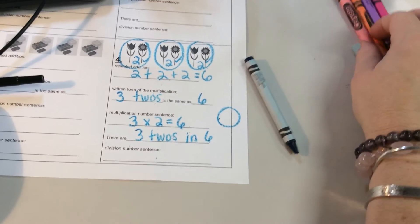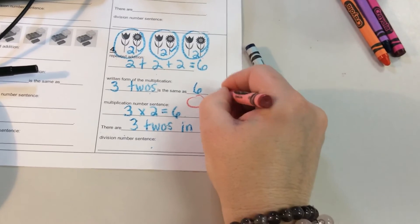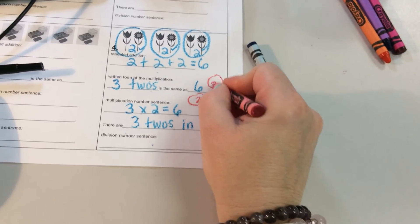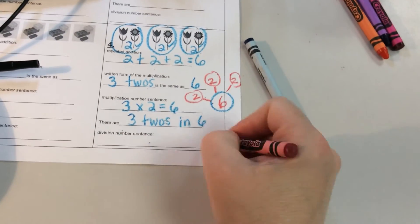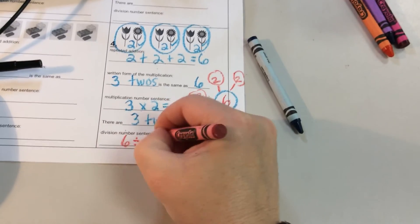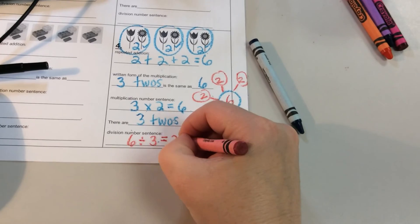We have a whole of six. And we have three groups, or three parts. Each part has two. We're going to write our division number sentence. We have a whole of six. And we divide it into three groups. Each group has two inside.